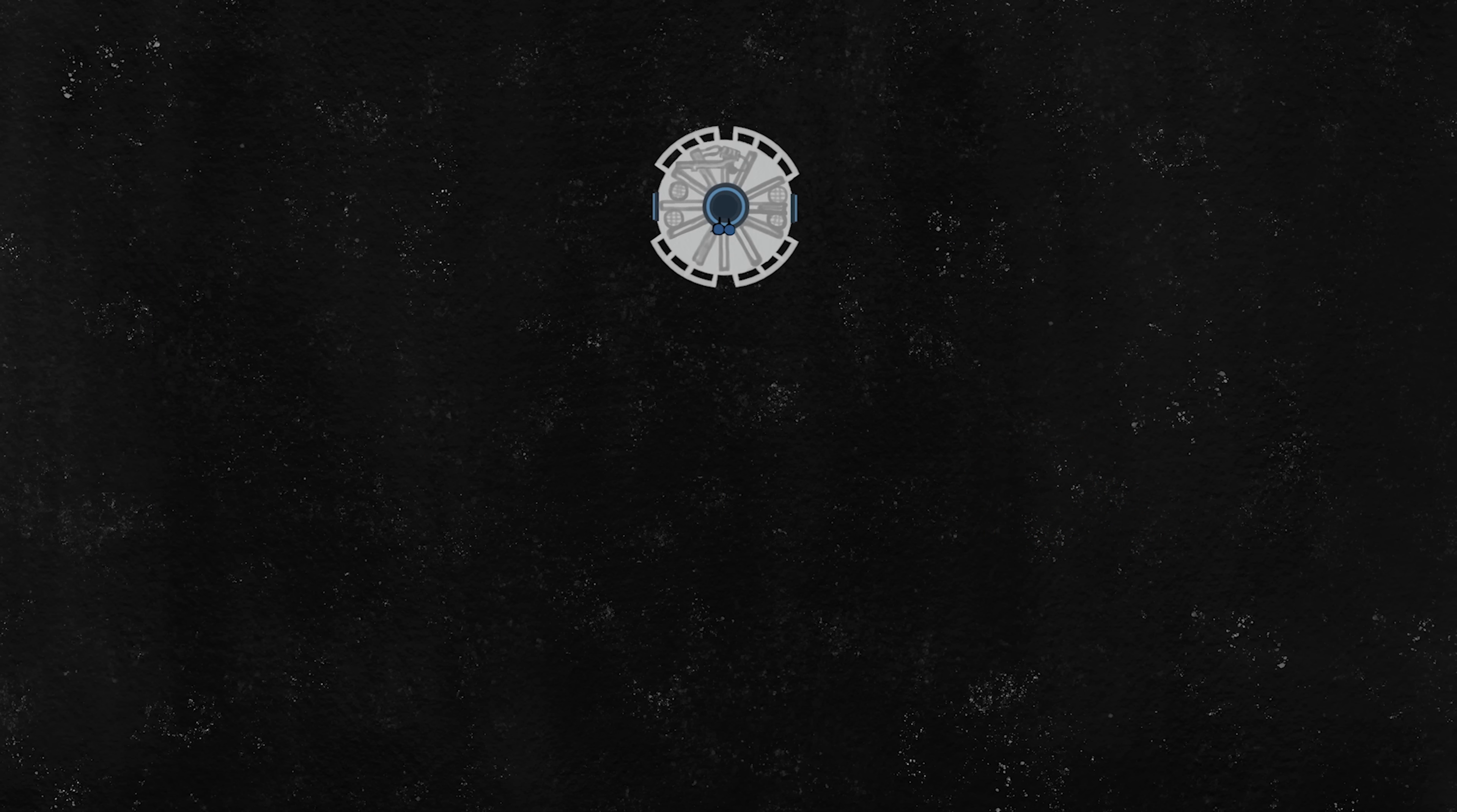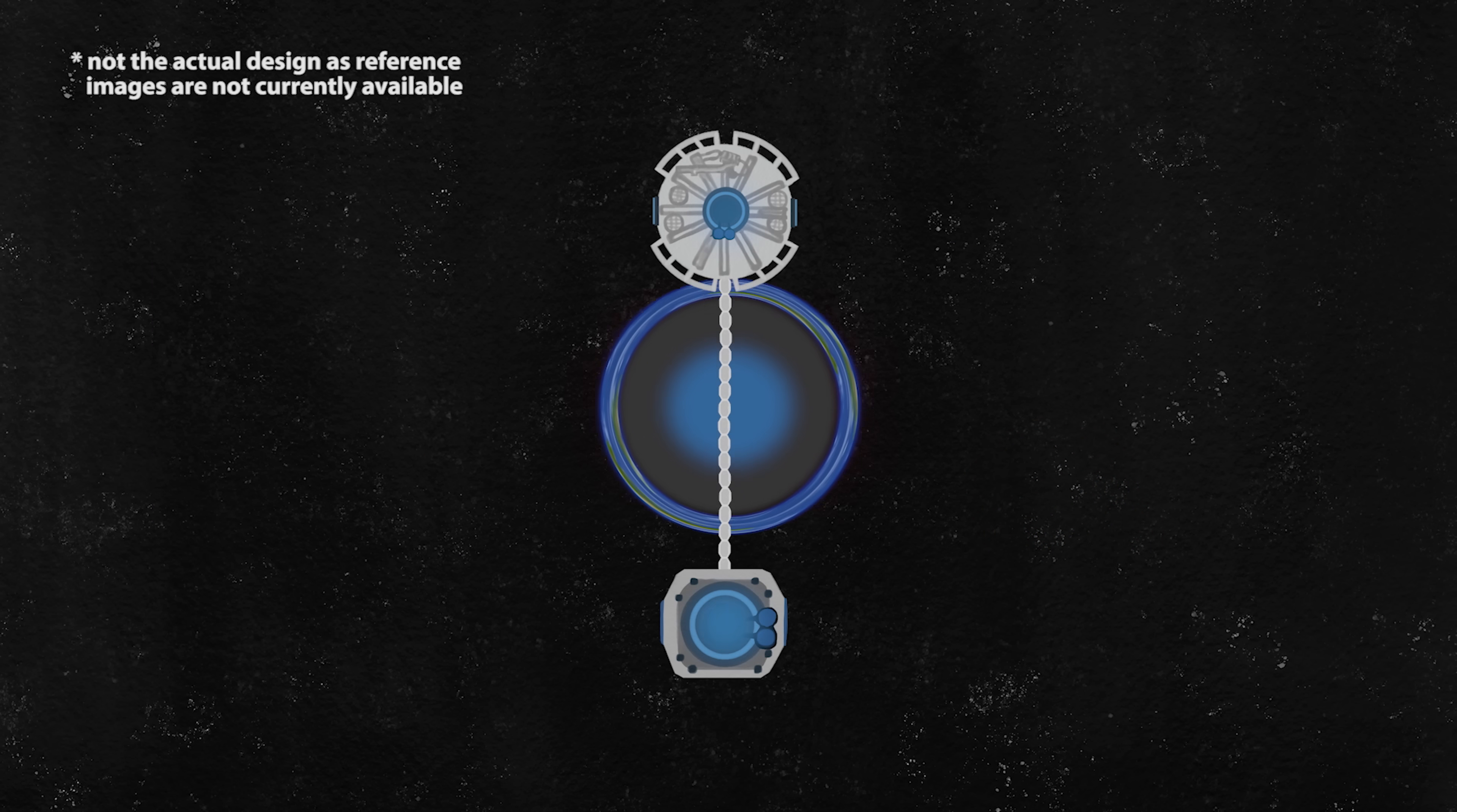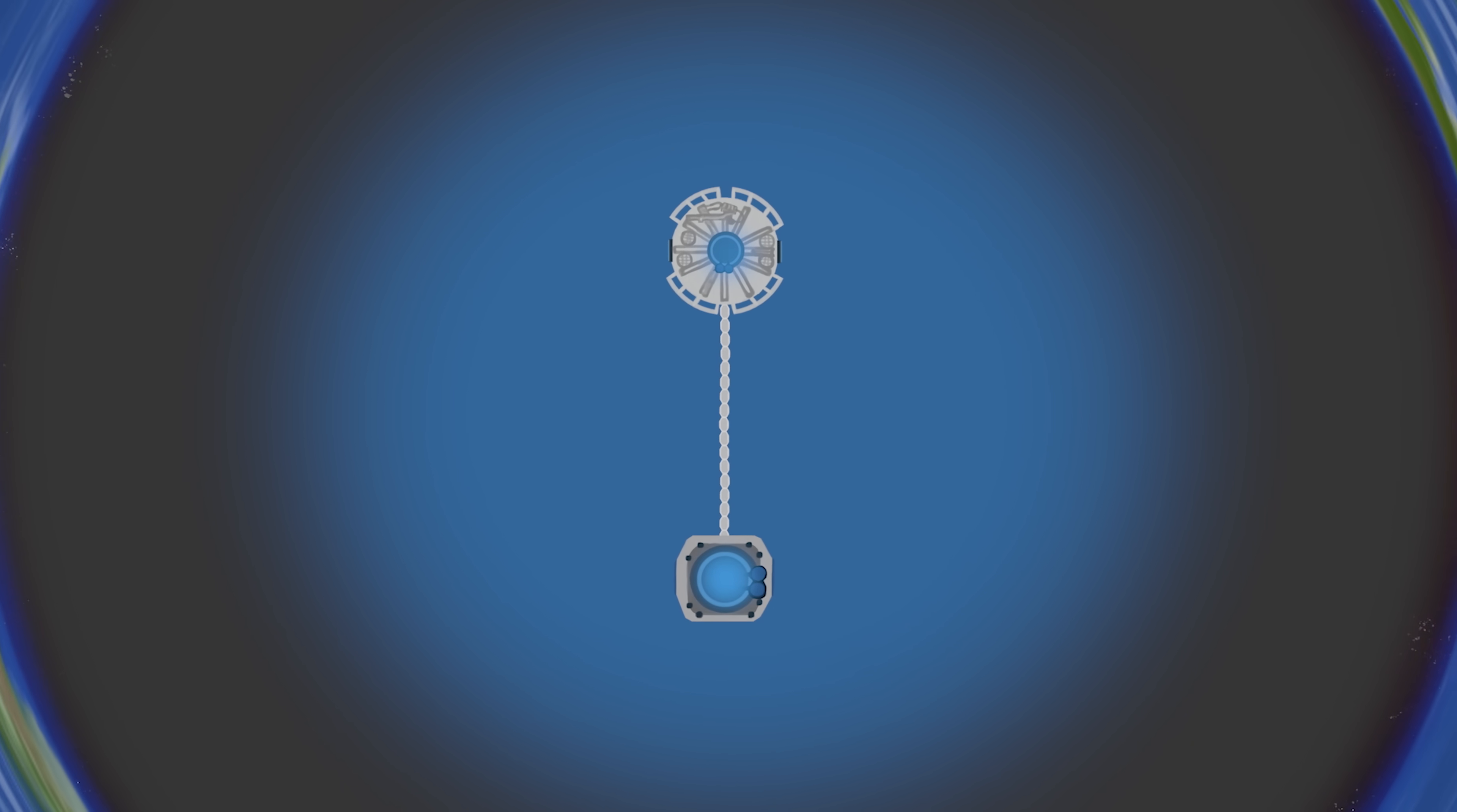One idea is to build the spacecraft with the telescope on one end, tethered to a counterweight at the other end, using ion thrusters for propulsion at this point.